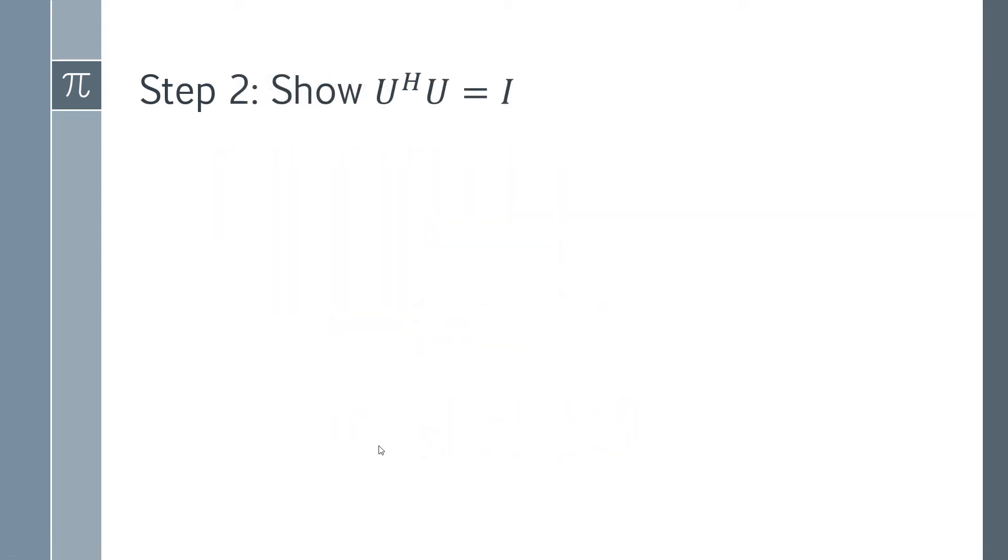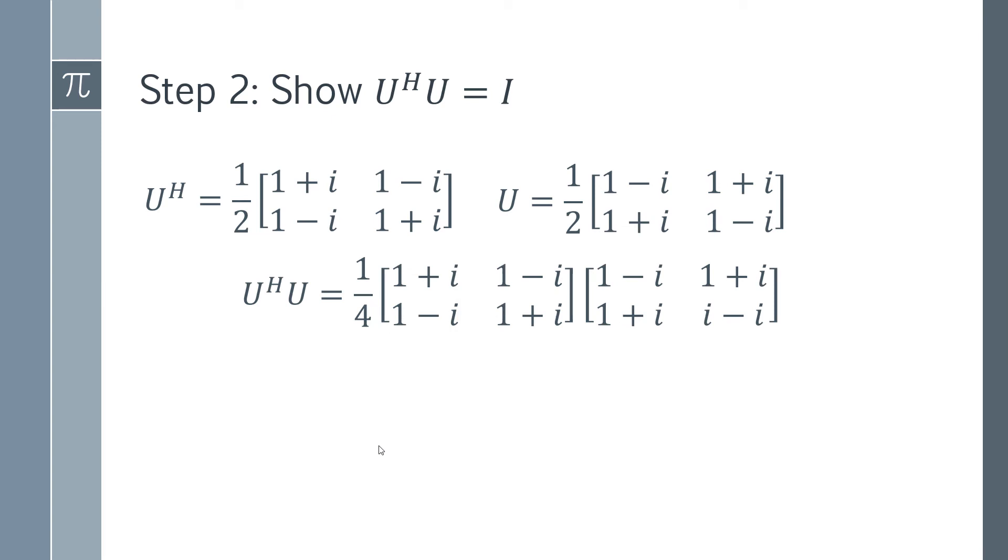The next step is to show that those two matrices multiplied together are in fact the identity matrix. So we've got our Hermitian matrix. So we've also got our original matrix. So we just need to multiply those two together. So you're doing standard matrix multiplication.